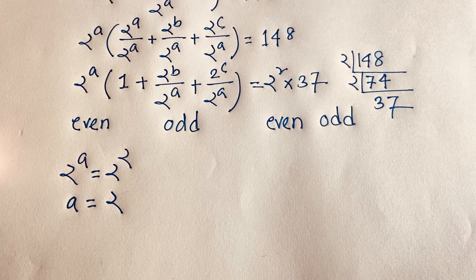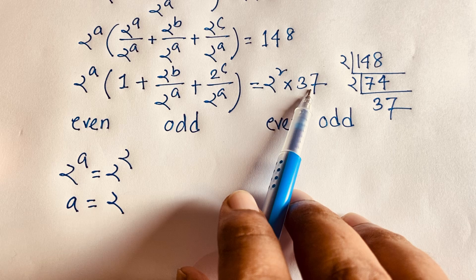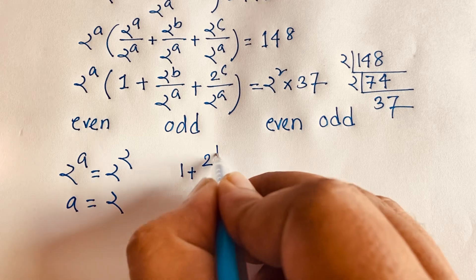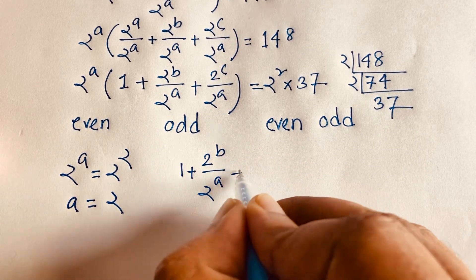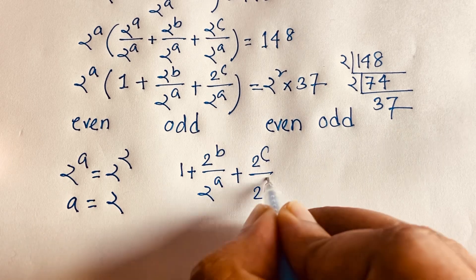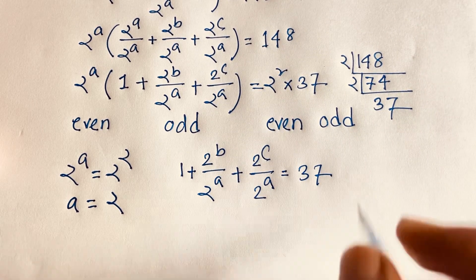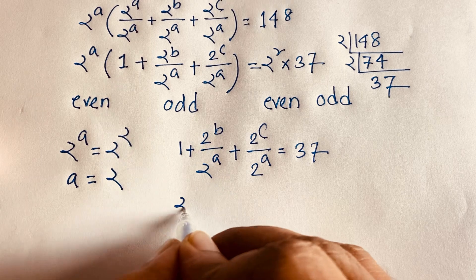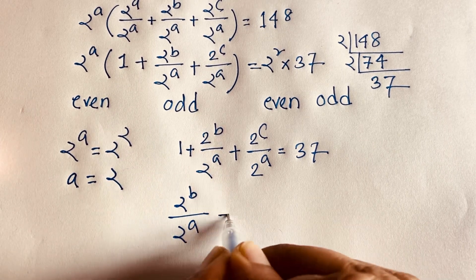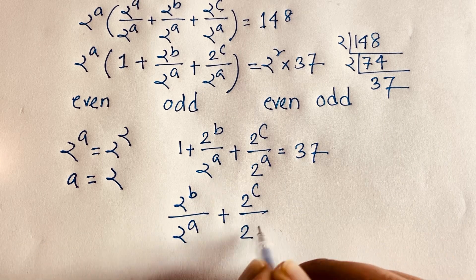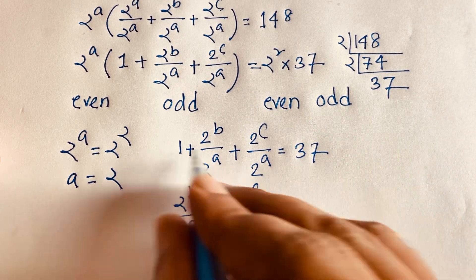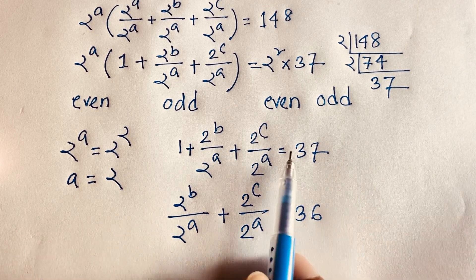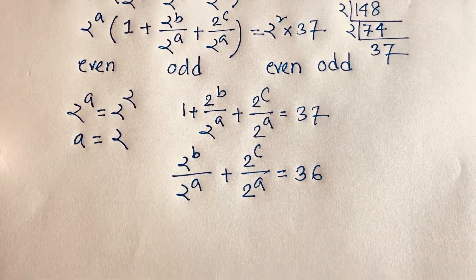But we need a, b, and c. At this moment, substituting a equals 2, the equation becomes 1 plus 2^b over 2^a plus 2^c over 2^a equals 37. So 2^b over 2^a plus 2^c over 2^a equals 37 minus 1, which is 36.